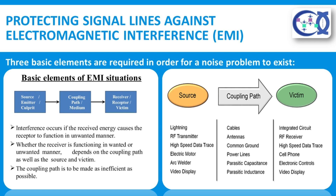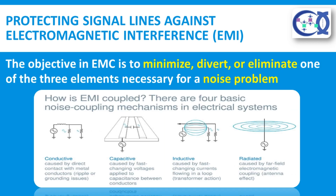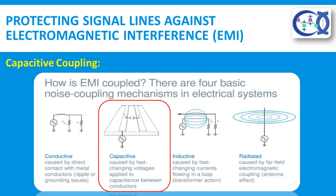Three basic elements are required in order for a noise problem to exist. First, a noise source to generate the noise. Second, a receiving device which is affected by the noise. Third, a coupling channel between the source and receptor. The objective in electromagnetic compatibility is to minimize, divert, or eliminate one of the three elements necessary for a noise problem. Now we will discuss the methods used to protect signal lines against EMI.